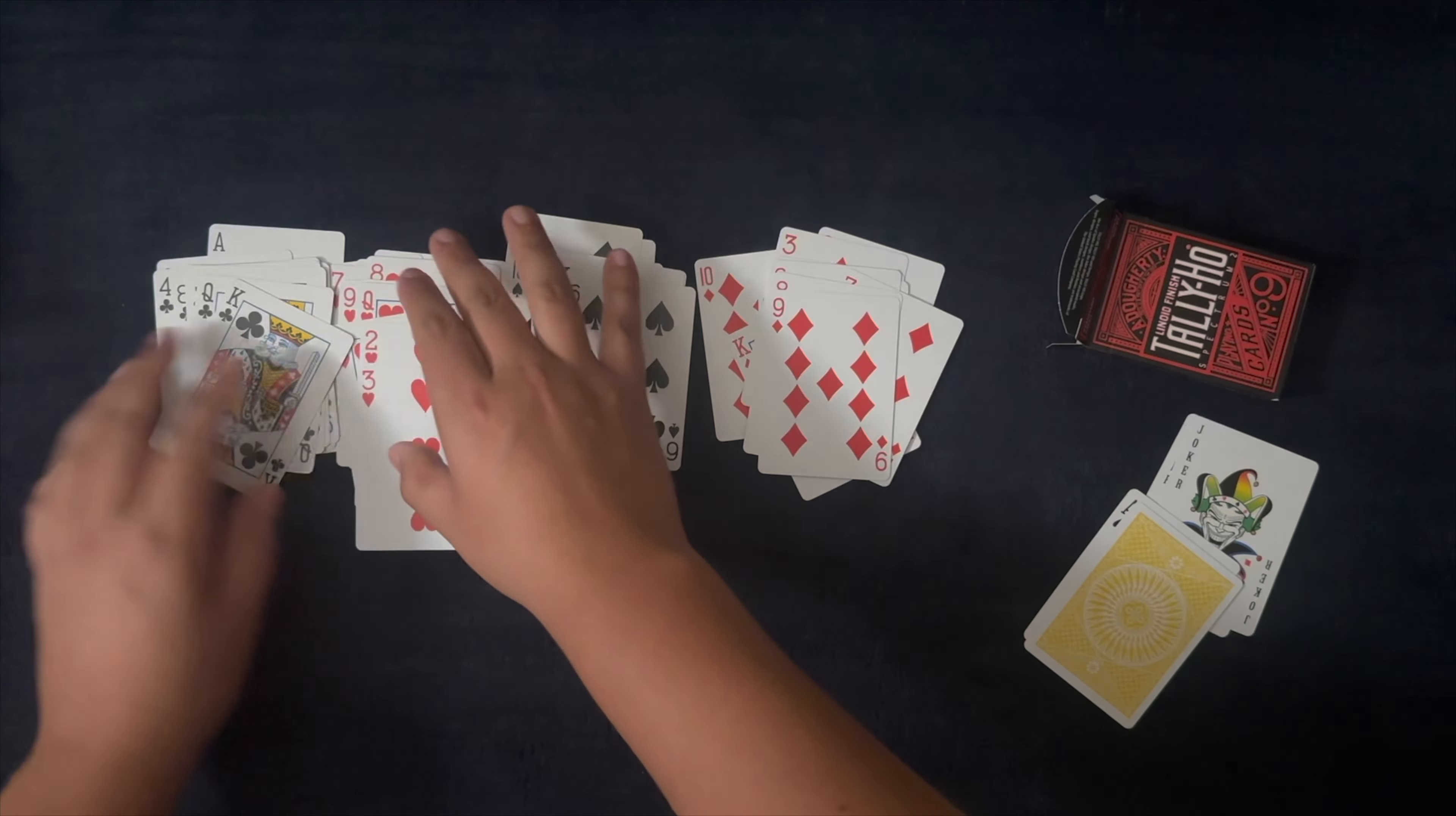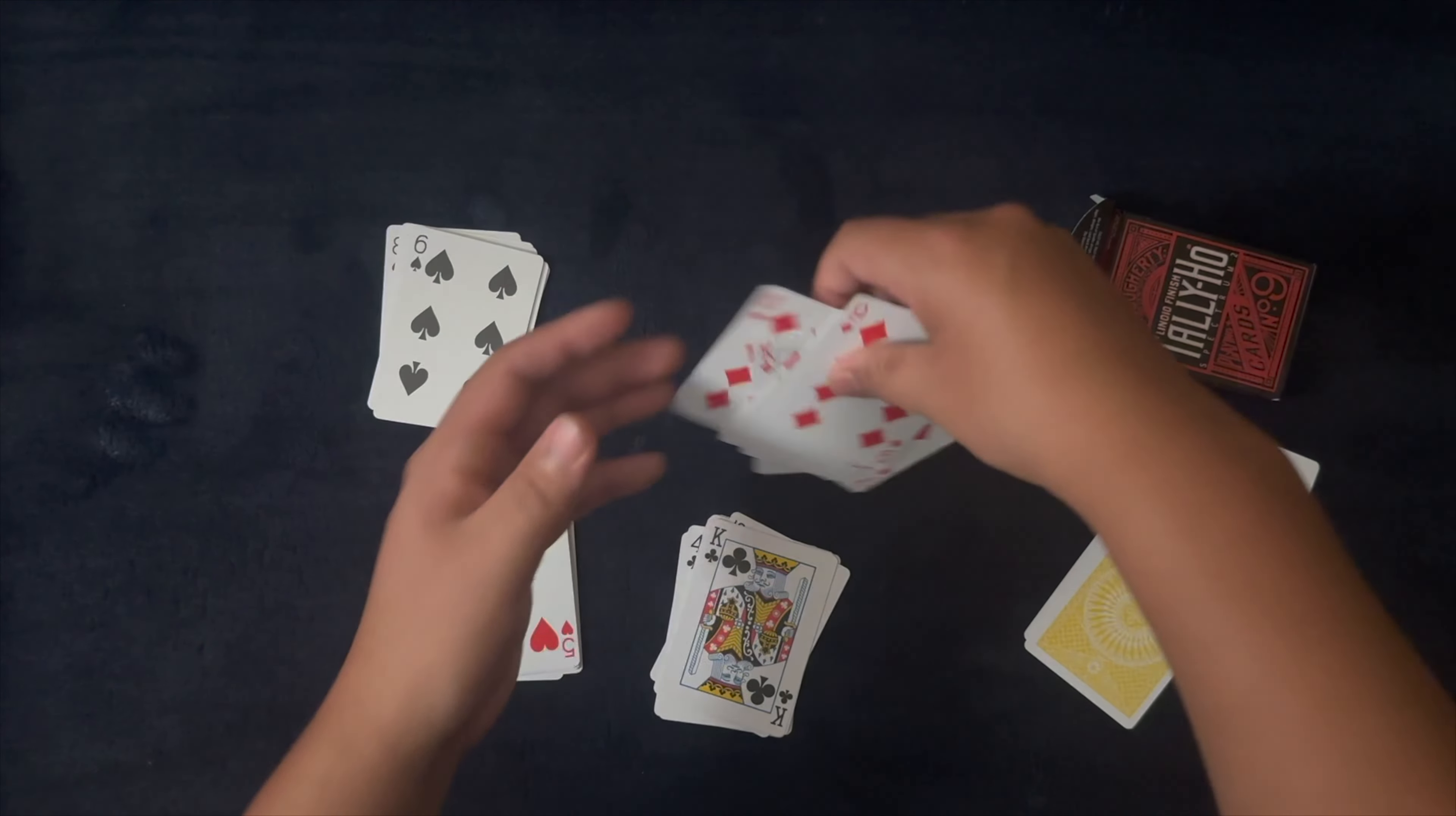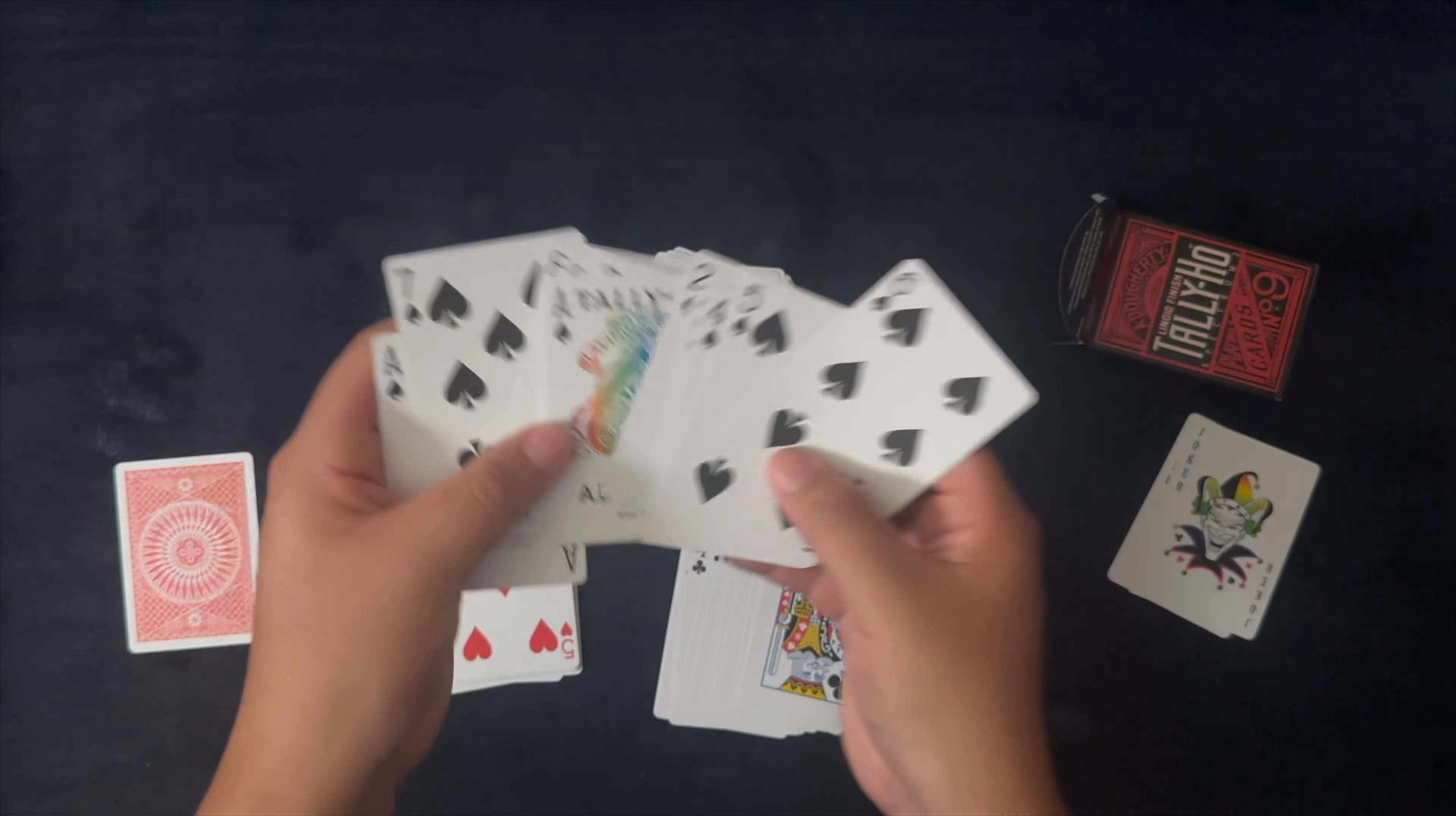Okay so all of the spades ace to king, kind of weird saying that at this point. Ace through six, seven through king, and lastly ace through nine and king. Awesome, so let's put away our gaff cards as we have two ace of spades. Which one do we like more? We like that one more don't we?